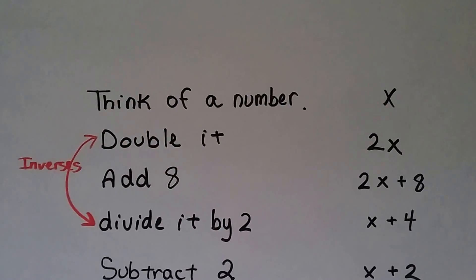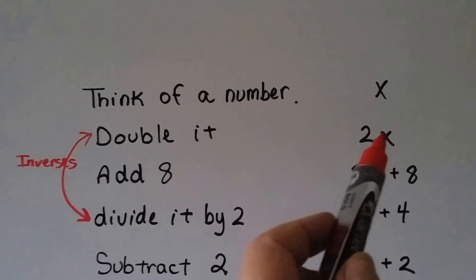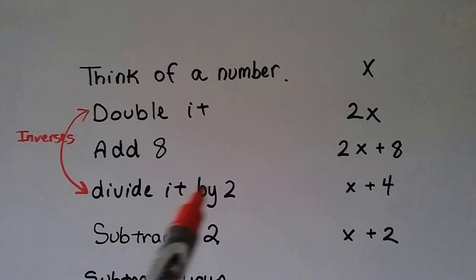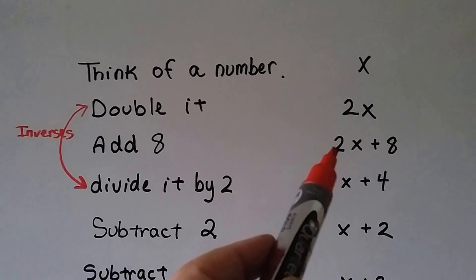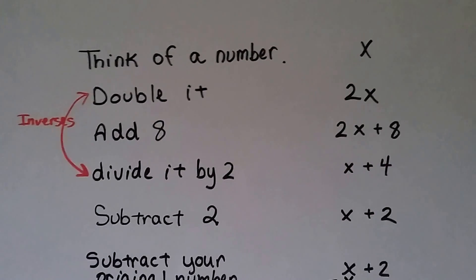Think of a number. So we think of x. And double it. Well, that's 2 times x. So we have 2x. Add 8. Now we have 2x plus 8. Divide it by 2. Well, 2 divided by 2 is 1, so we have 1x. 8 divided by 2 is 4, so we have x plus 4.